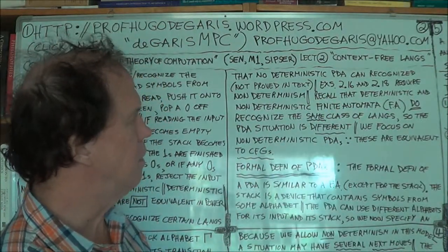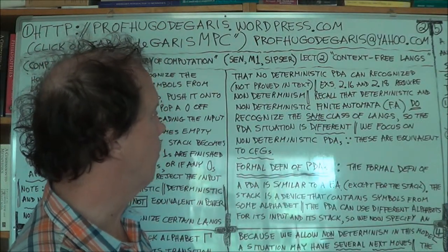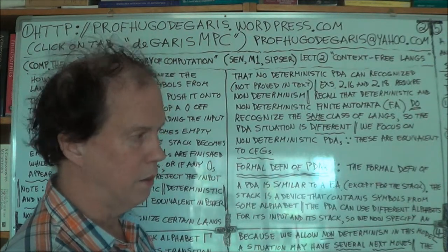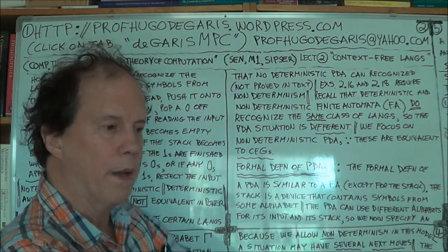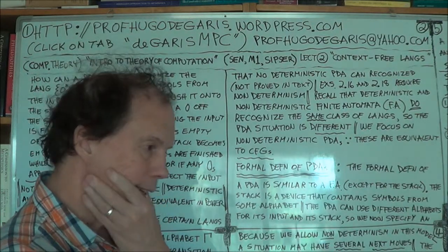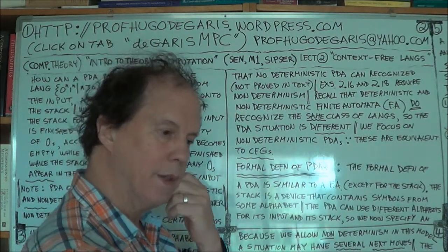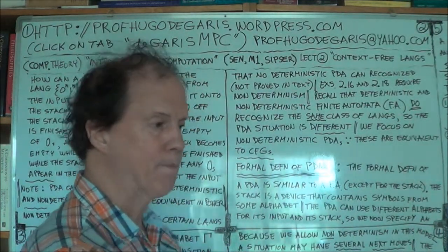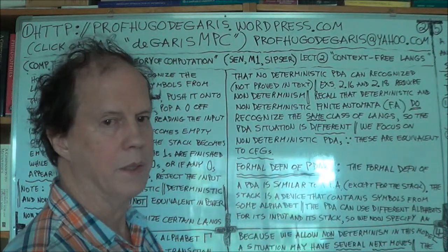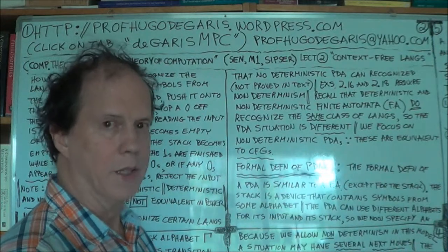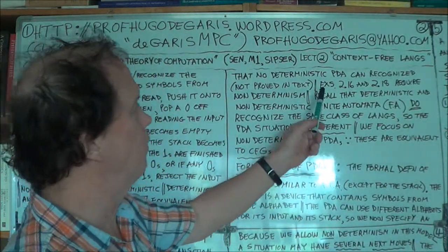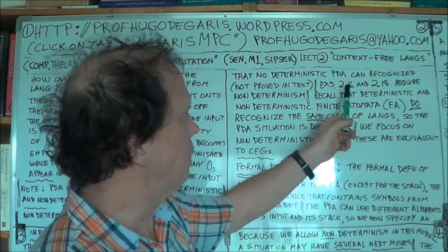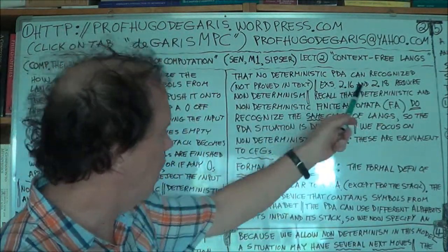From now on, in dealing with PDAs, we will deal with non-deterministic PDAs. Why? Well, we will show — on the next board, in fact — that non-deterministic PDAs are equivalent to the context-free grammars. So that's pretty important. For that reason, we won't be dealing with deterministic PDAs. Once we've done the formal definition of PDAs, we'll do some examples from the text — examples 2.16 and 2.18 — which require non-determinism.